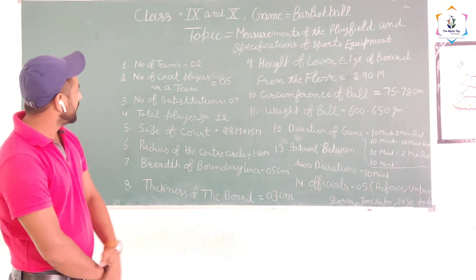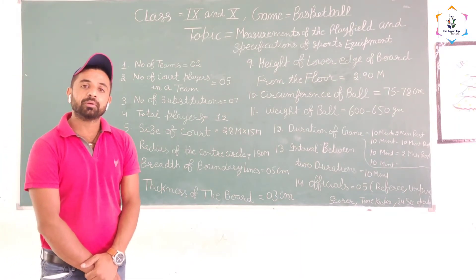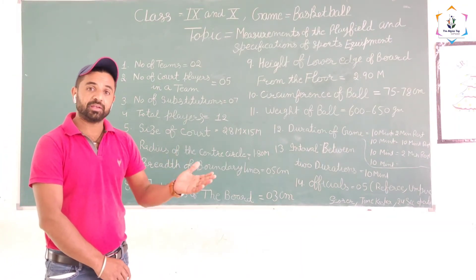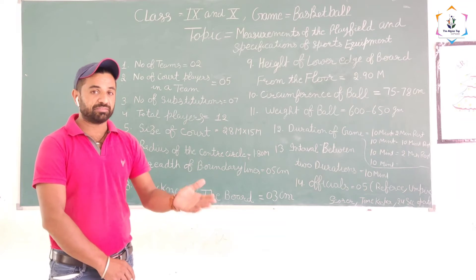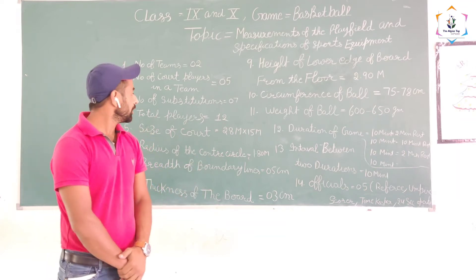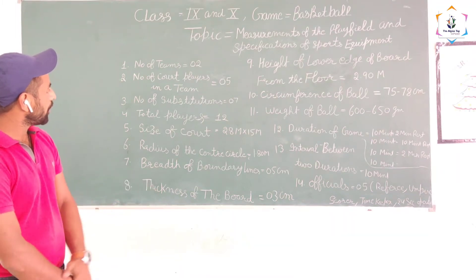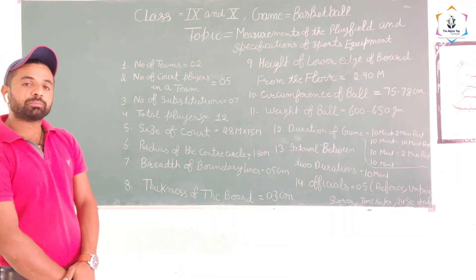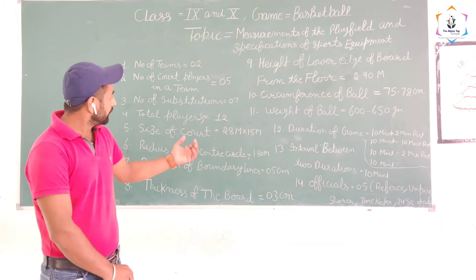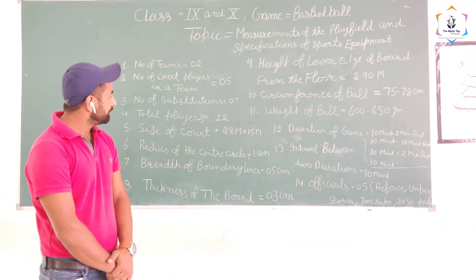Next point: total players. Total players are 12. Five players are playing on the court and the substitutions are on the outside of the court. Next point: size of the court. The court size is 28 meters by 15 meters.